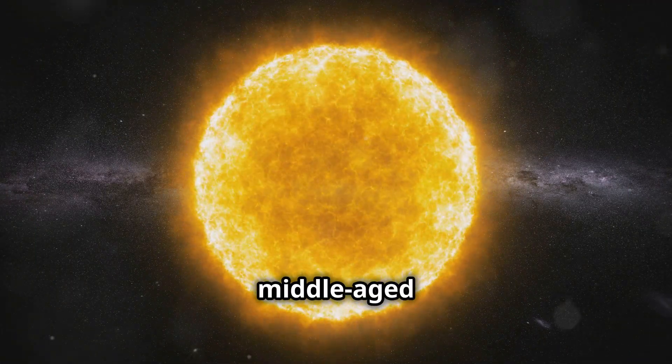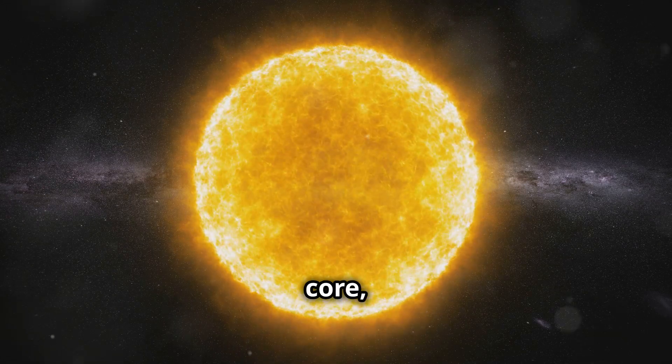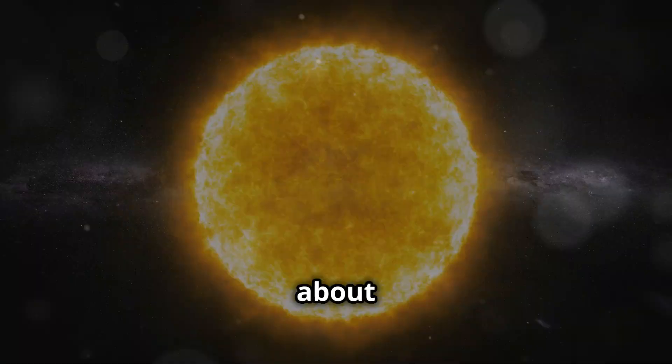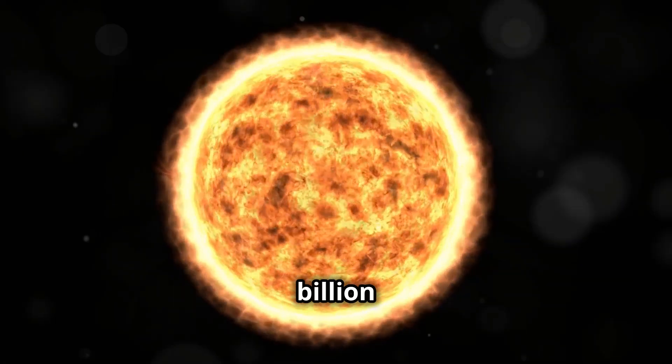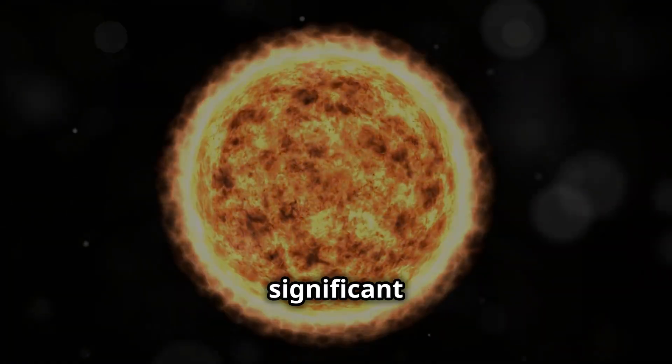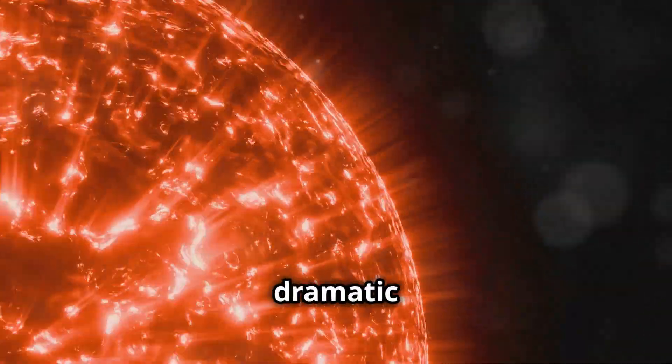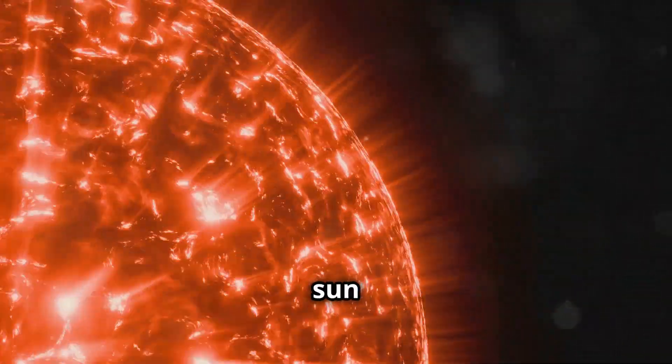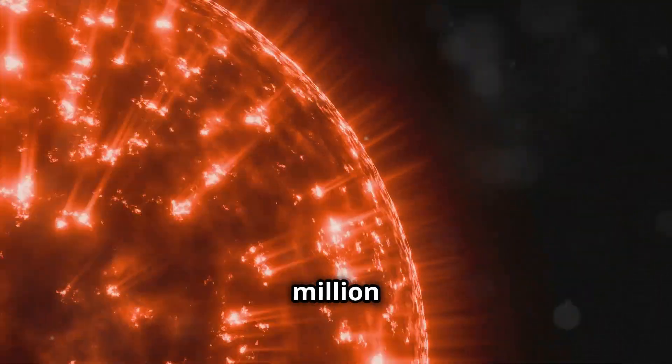Our sun, a middle-aged star, is currently fusing hydrogen into helium in its core, a process that has been ongoing for about 4.6 billion years. However, in about 5 billion years, it will exhaust its hydrogen supply, leading to significant changes in its structure and behavior. This depletion will trigger a dramatic transformation, turning our sun into a red giant, a phase that will last for a few hundred million years.